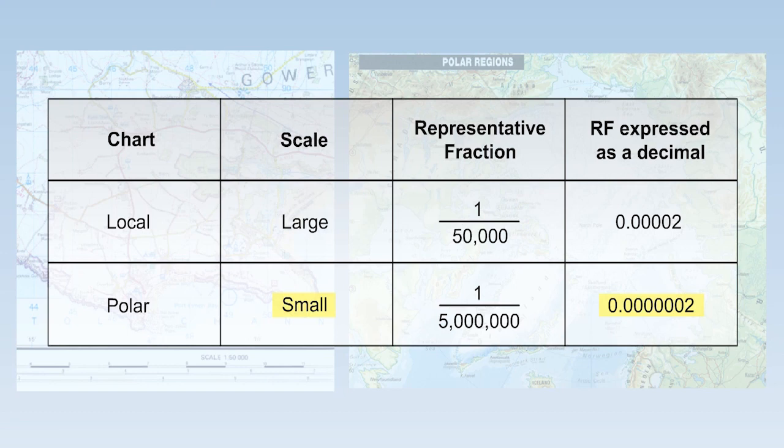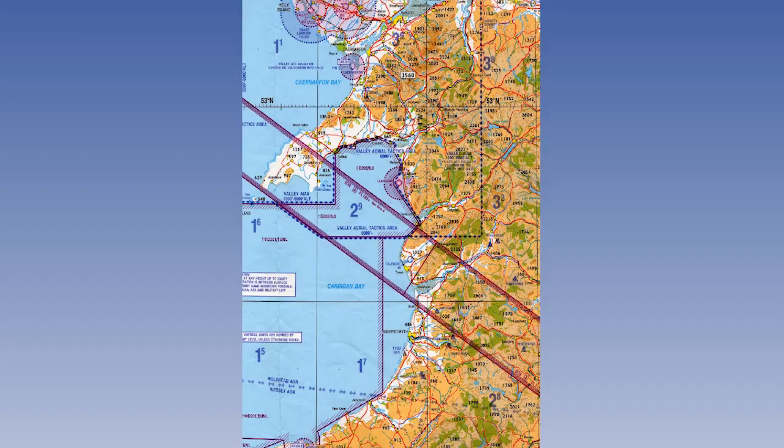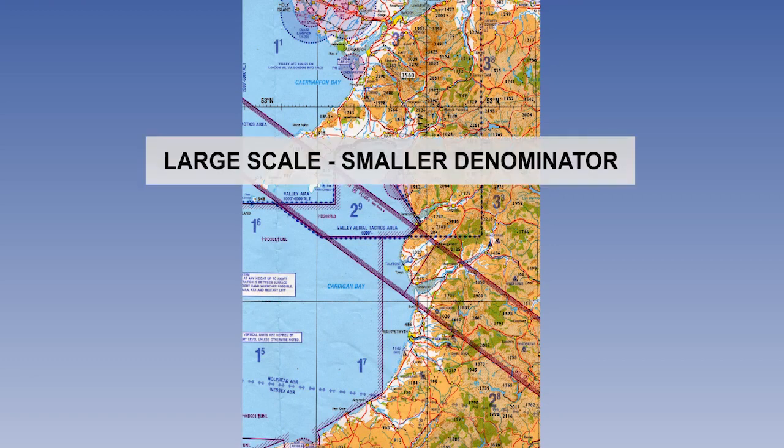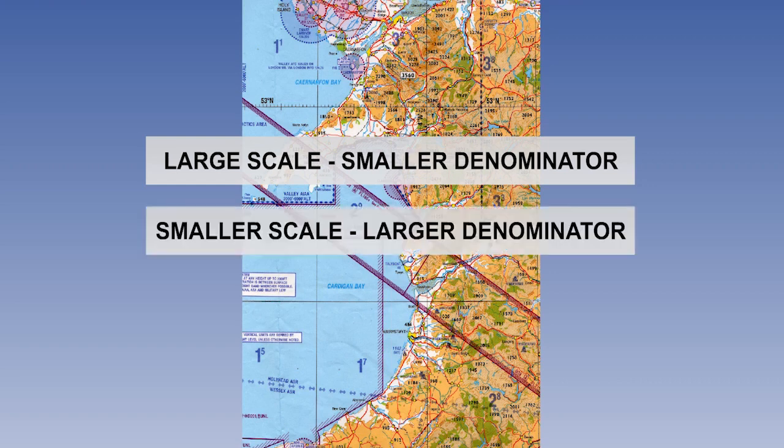0.00002 is a larger number than 0.0000002. The representative fractions are in the right sense. The confusion occurs because the denominators are easier to handle. And so this is how we usually refer to charts. We usually call this chart a half-million chart. Nobody would normally refer to it as a 0.000002 chart. It is just too unwieldy. So the logic of large and small is correct. A larger scale is a smaller denominator. A smaller scale is a larger denominator.